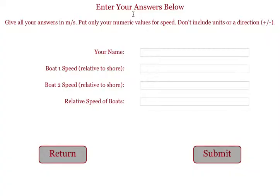When students are ready, they'll click on the end button. It will then ask them to type in their name. It'll ask them for the speed of each boat. So boat one was going kind of slow. Boat two was going much faster.